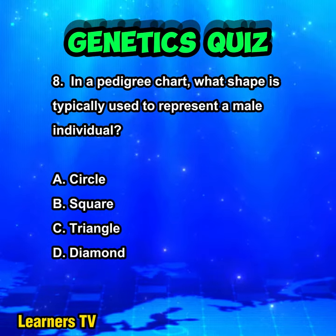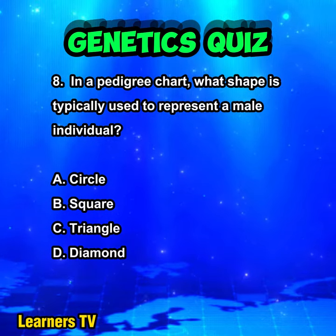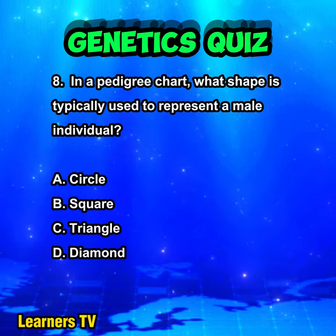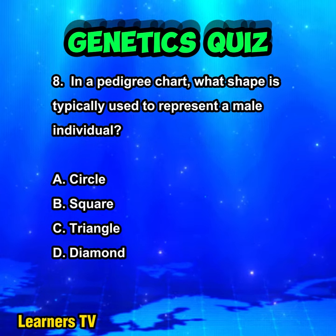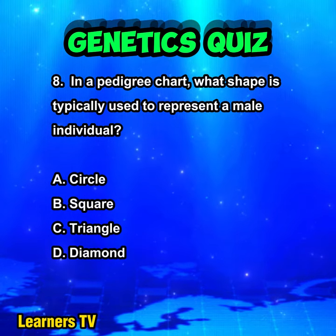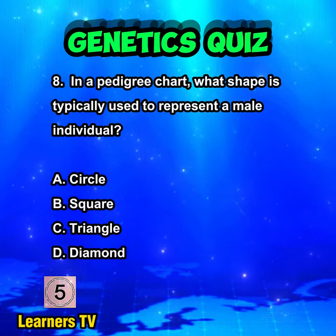In a pedigree chart, what shape is typically used to represent a male individual? A. Circle. B. Square. C. Triangle. D. Diamond.